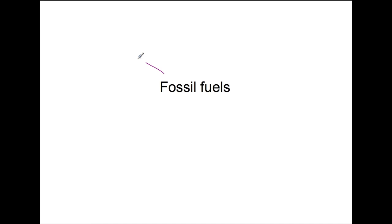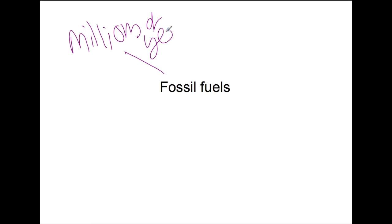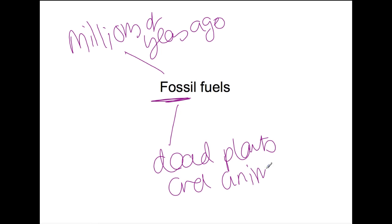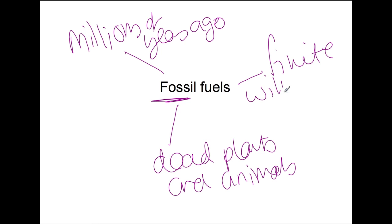Fossil fuels were all formed millions of years ago, from the fossilized remains of dead plants and animals. They are what we would call a finite resource, which means that they will run out. Fossil fuels are incredibly important for our lives — we use them to power vehicles, to heat our homes, and they're also used to make useful products like plastics. Therefore we need to make sure we conserve the small amounts of fossil fuels that we have left.